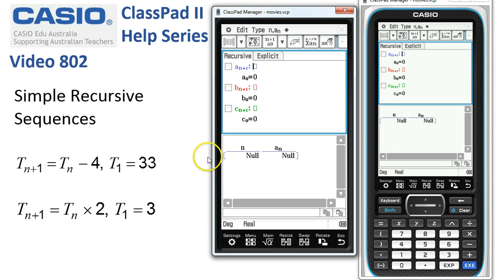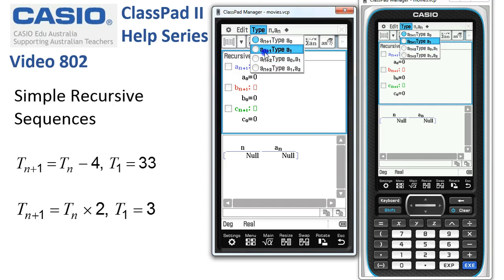Now for this first one we need to start from term 1 and it's a straightforward type of recursion. So we choose type the second one down, an plus one.